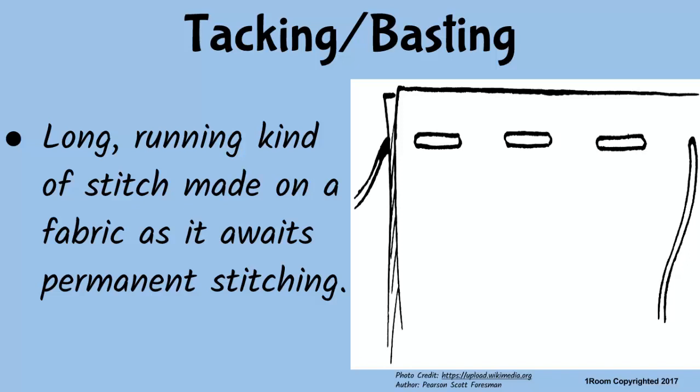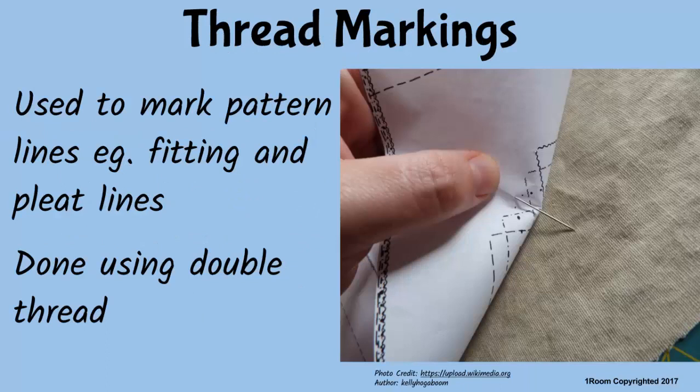I once saw a tailor making some long, running kind of stitch to hold some piece of cloth together. I just don't know what they are called. That stitch is called tacking or basting. It should be done in a contrasting color with the fabric so that it is easy to identify and remove afterwards.